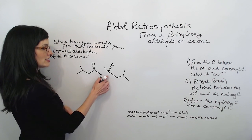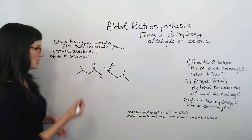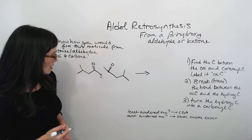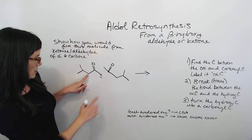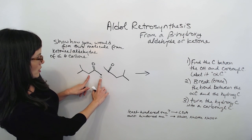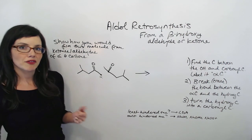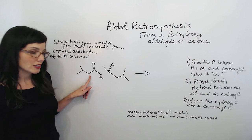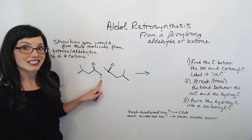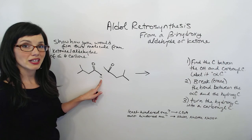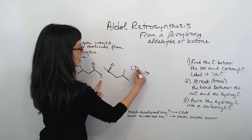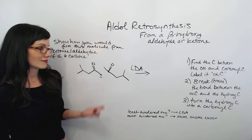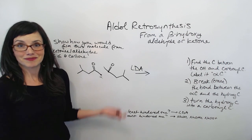Now I've just got to decide on a base — what base did I use to make these? In this case, there were two alpha protons to choose from, but we didn't choose the more hindered one. We chose the less hindered one, so we need to use LDA. LDA gives the kinetic product, and that's all we have to do.